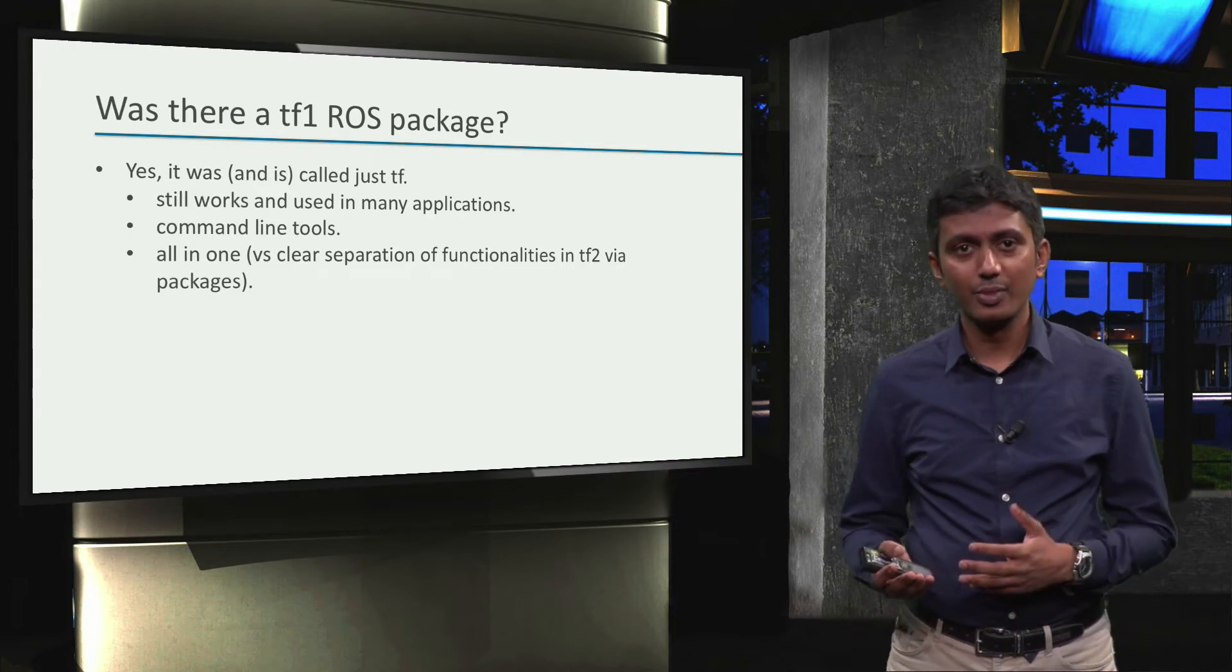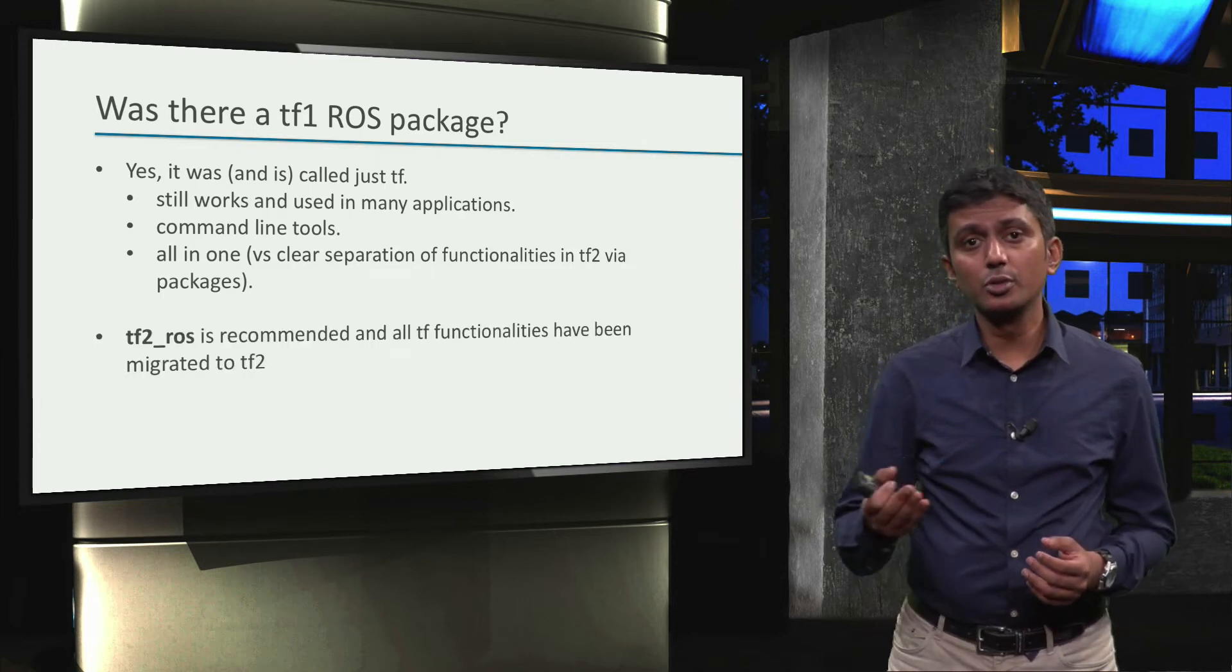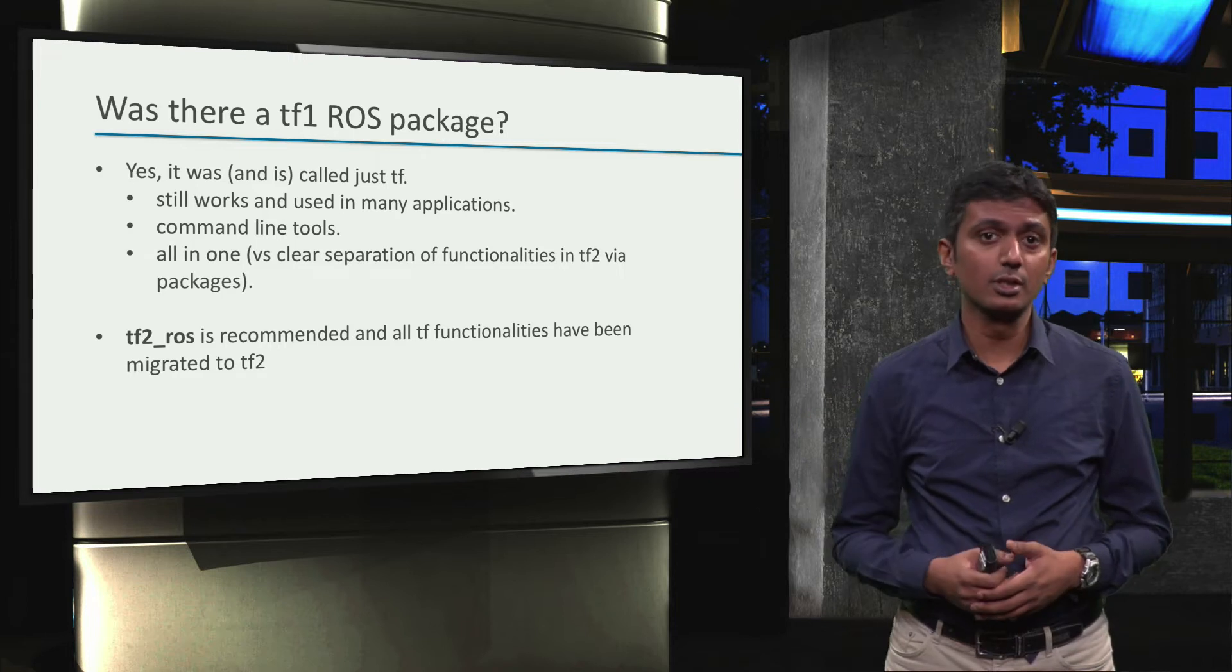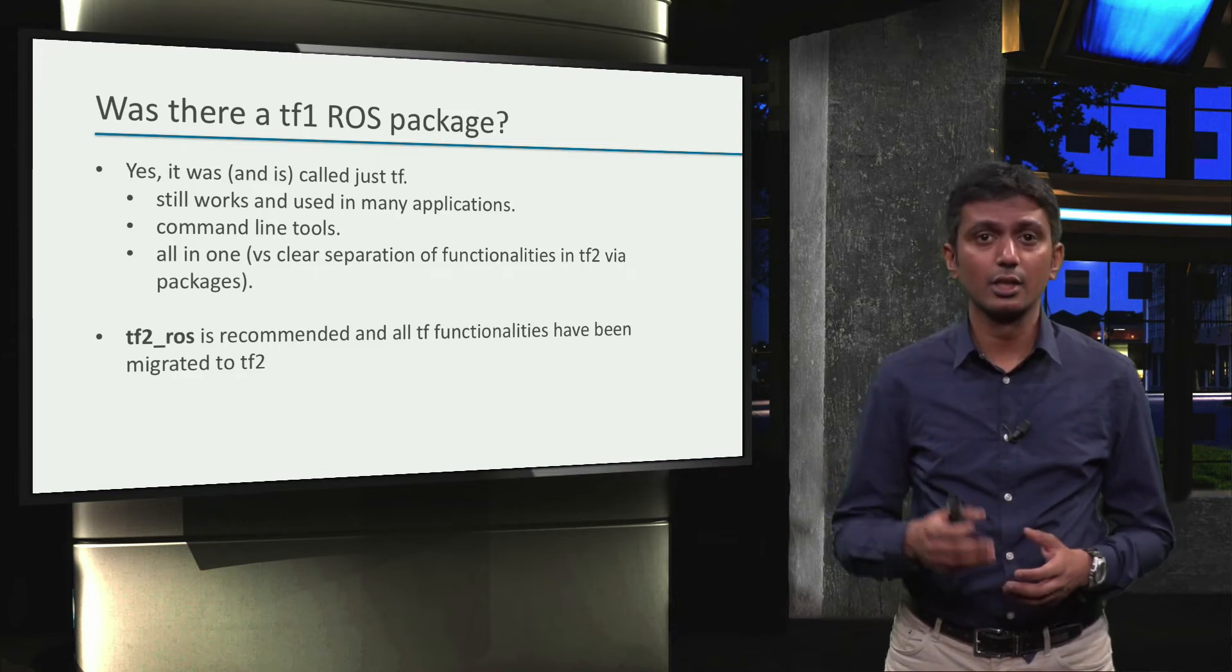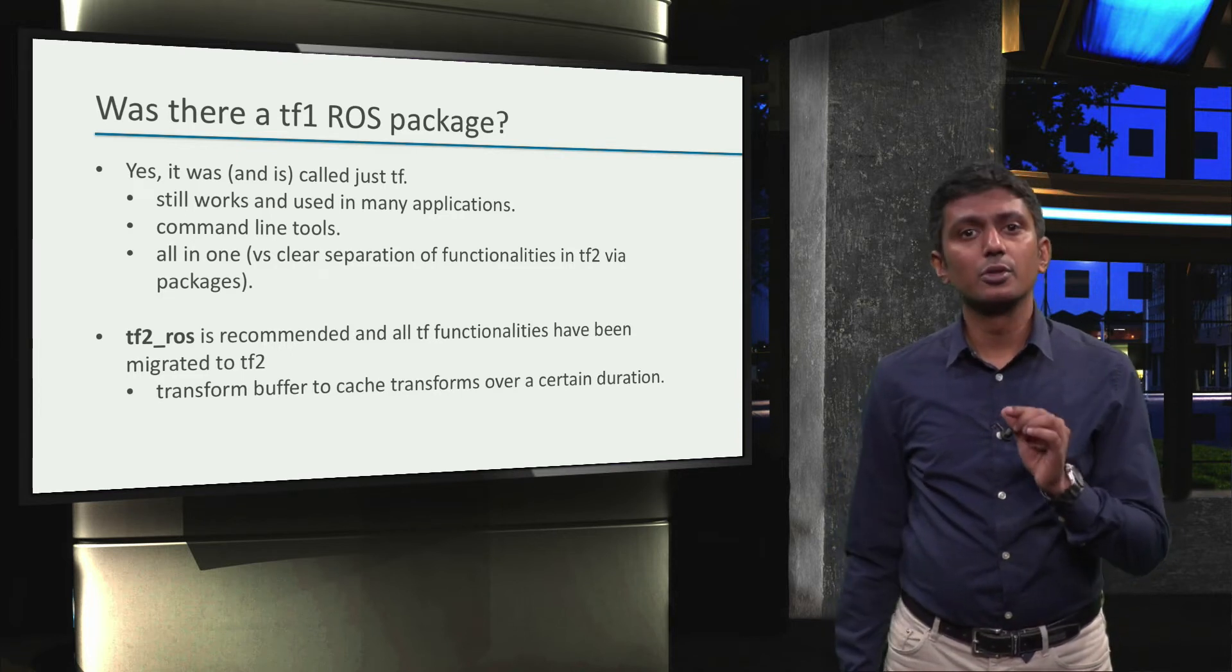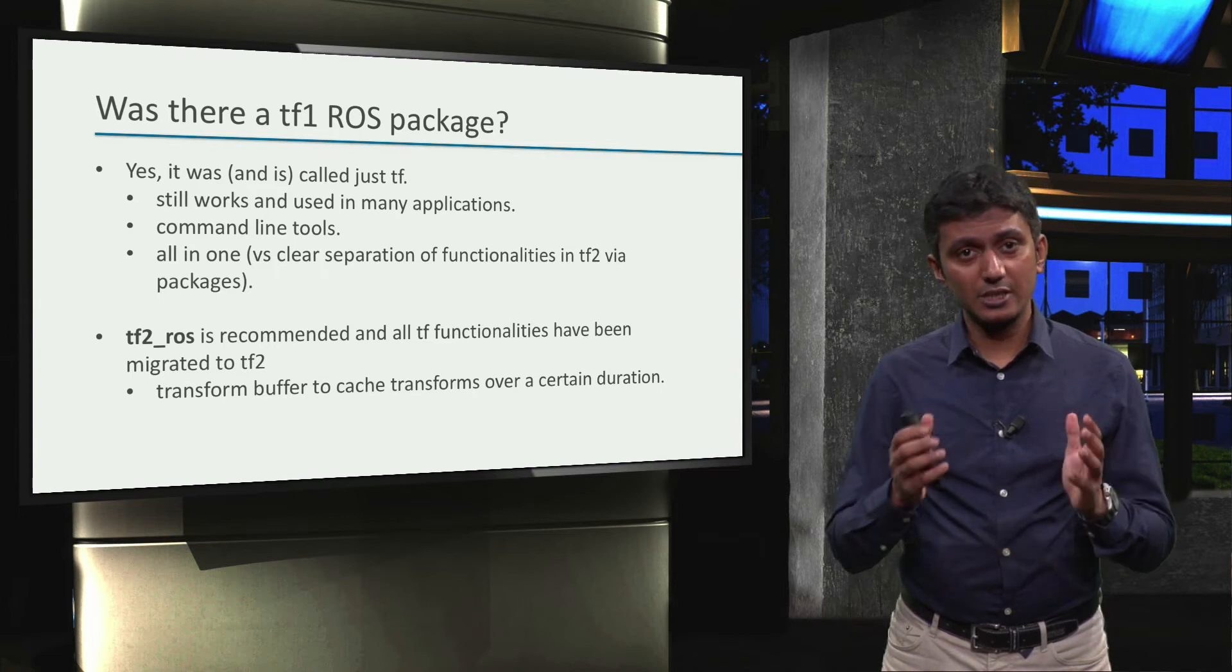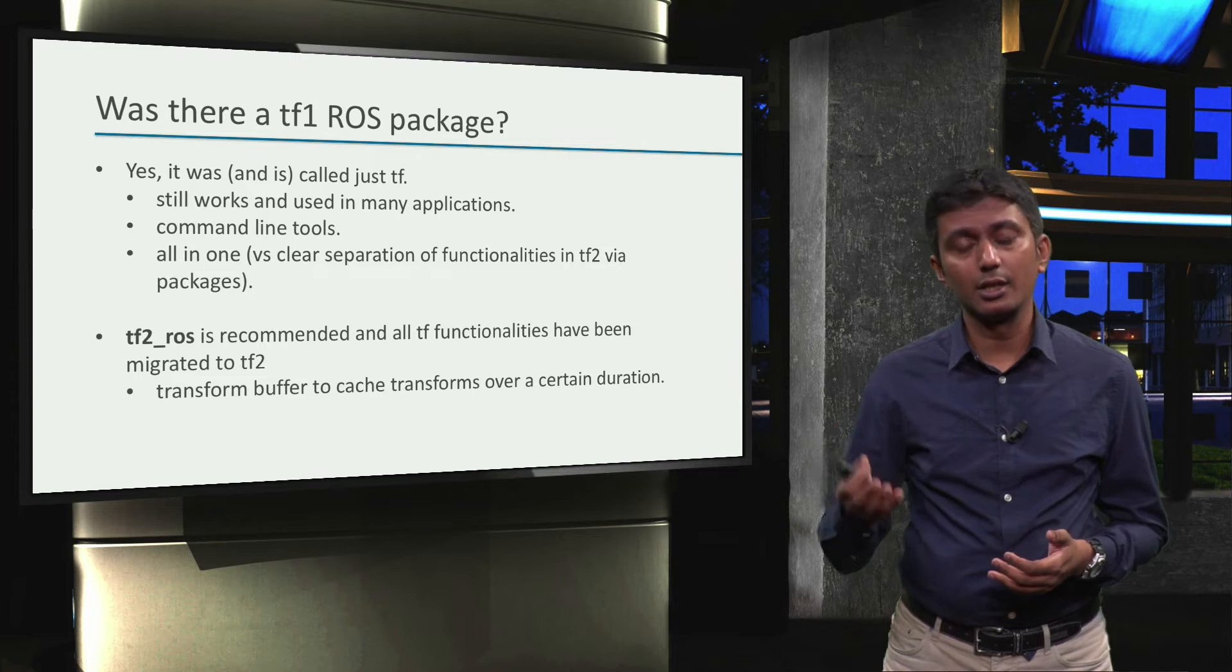But with tf2, the division of functionality is much more clearly structured, and use of tf2-ros package is however currently recommended and most of the tf functionality has been migrated as well to tf2-ros and the other packages in the new structure. But the main advantage with tf2-ros is the availability of a transform buffer, which can cache transform information for a specified duration. We will explore the transform buffer in further detail in the next two videos.